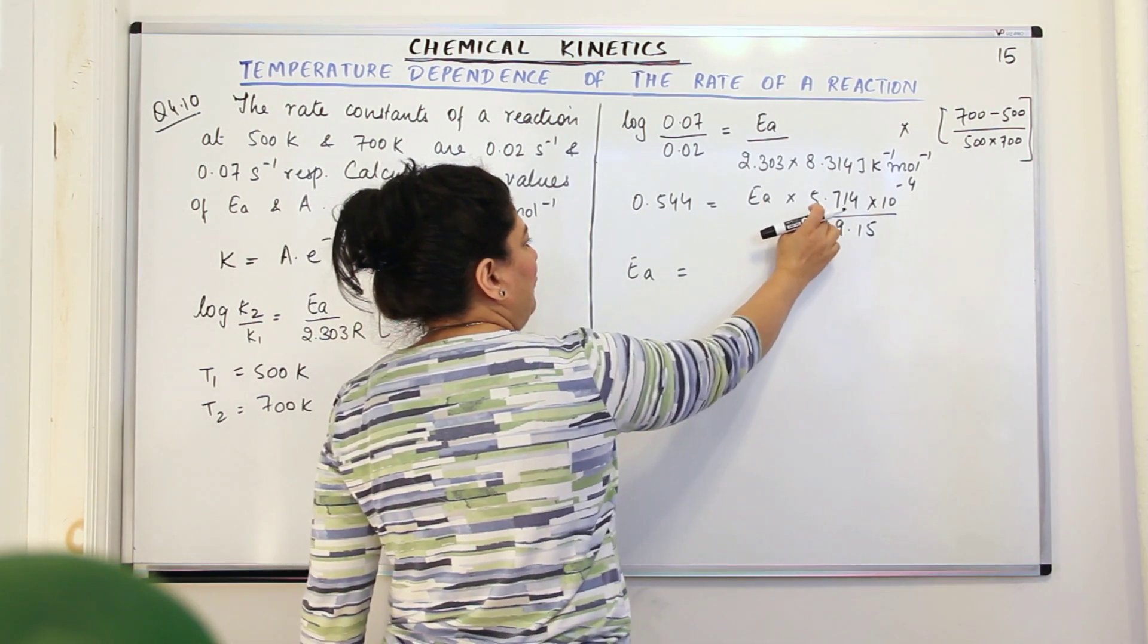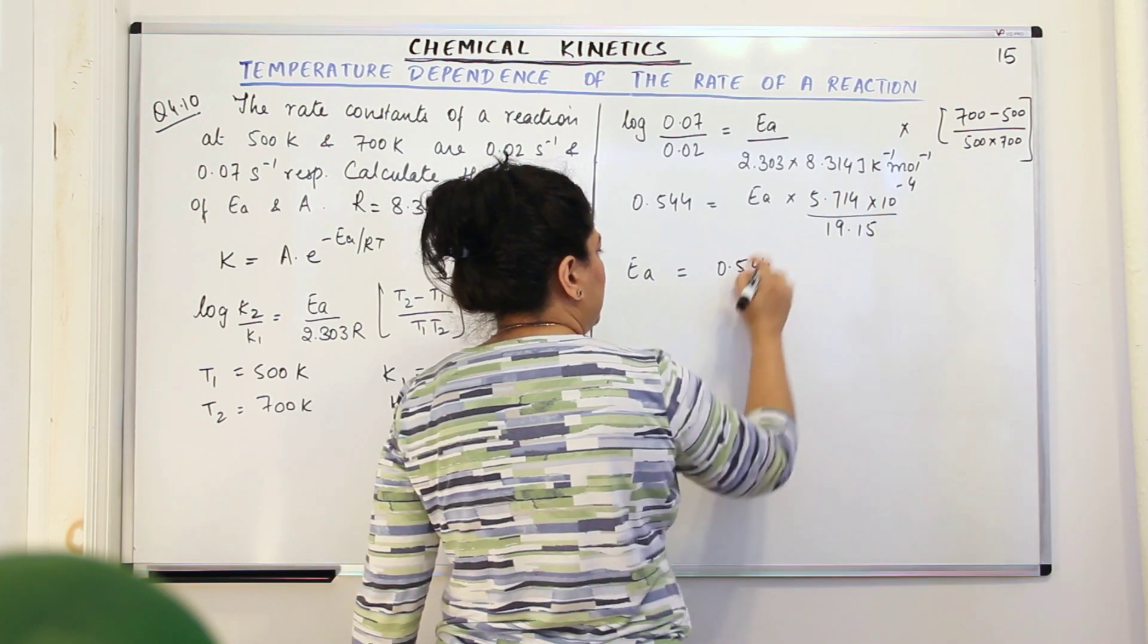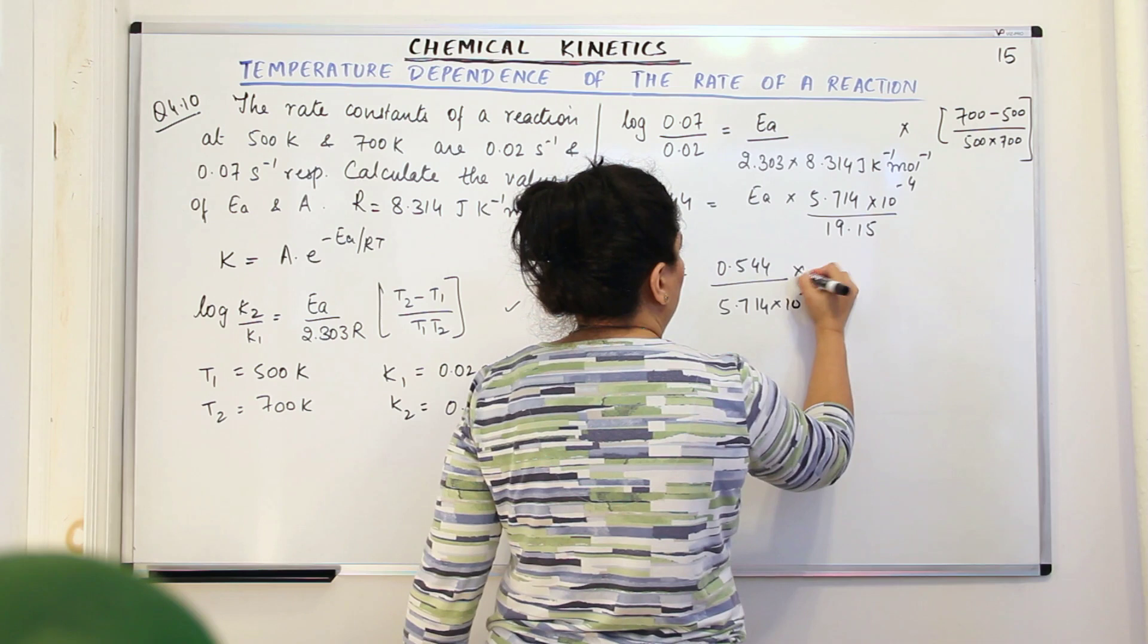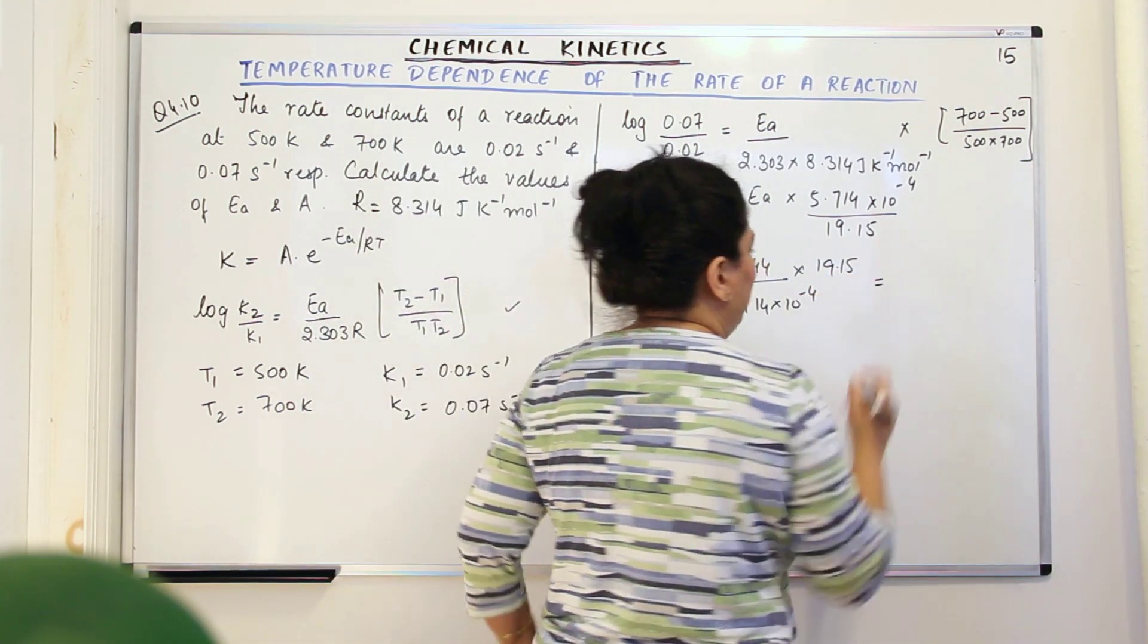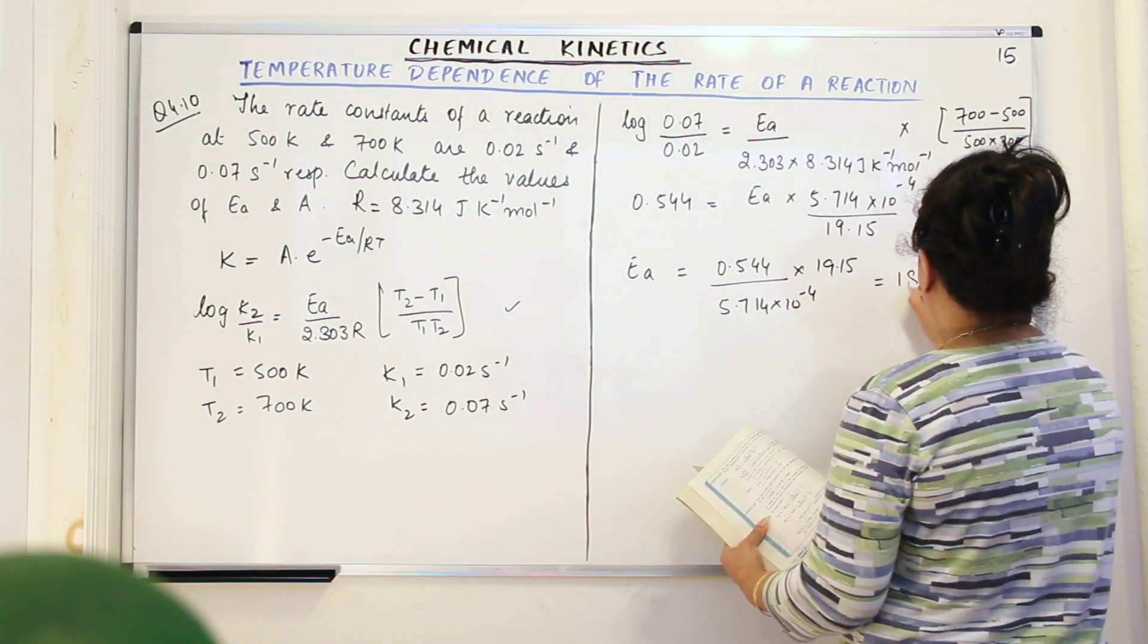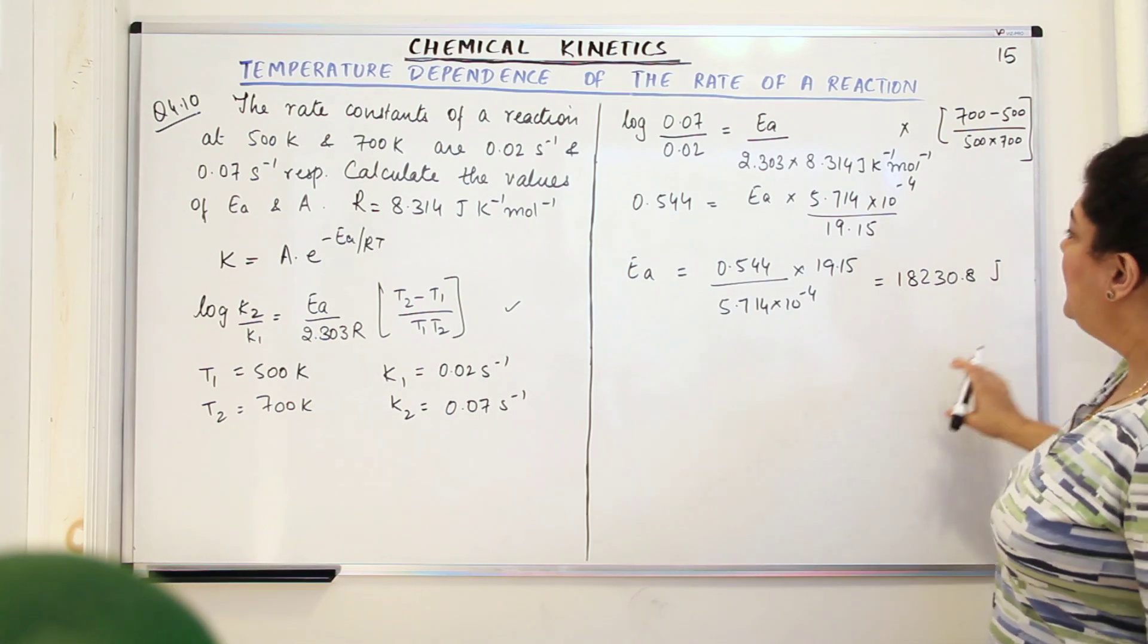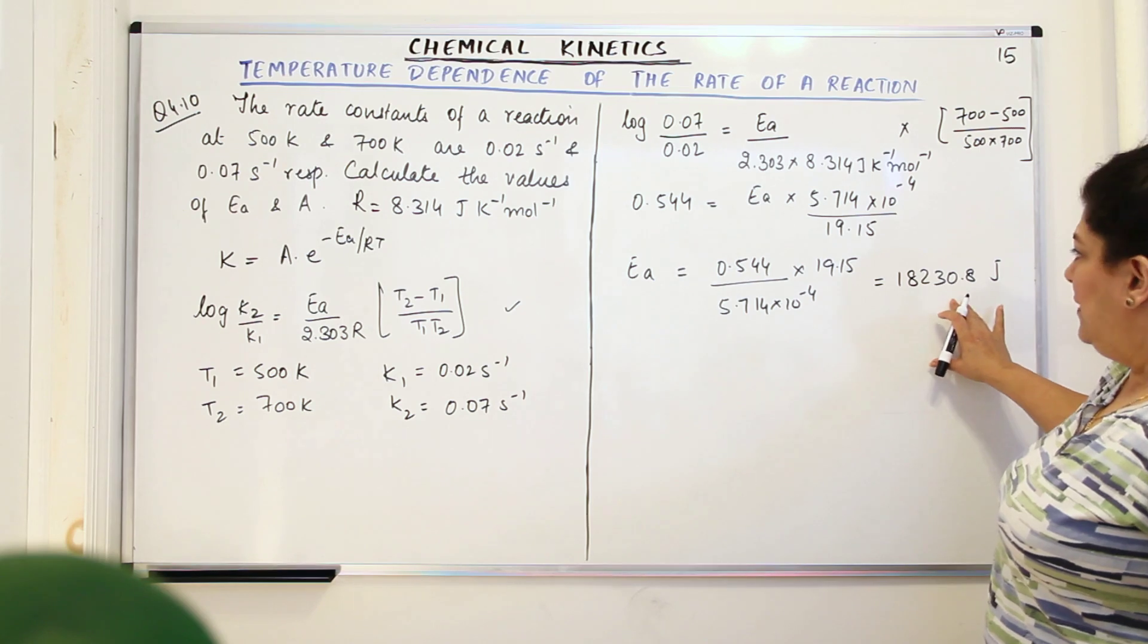So 0.544 remains as such. This comes down upon 5.714 into 10 to the power minus 4 into 19.15. And when you solve this, you'll get the value of Ea, which will be equal to 18230.8 Joules. Now this is the value of Ea that you get.